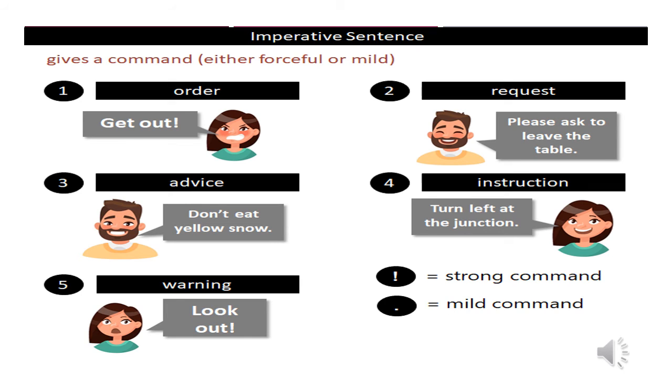Number four is instruction — Turn left at the junction. And number five is warning — Look out.